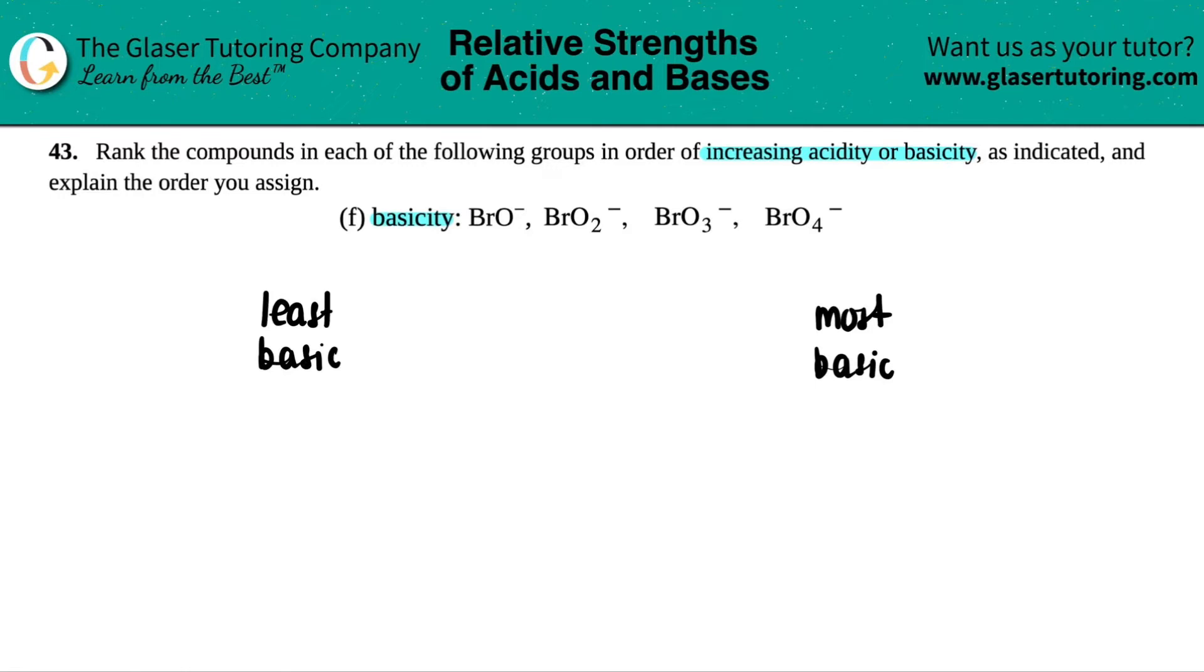But remember, if we can't think of a basic trend, you could always flip it on its head. If you are least basic, that's another way of saying you're most acidic. So least basic always means most acidic, and then vice versa. Most basic means least acidic. So we could think of this in terms of an acidic trend, and we'll still get the same answer.